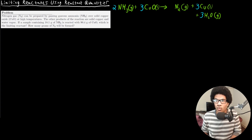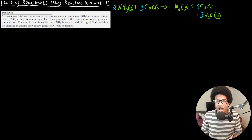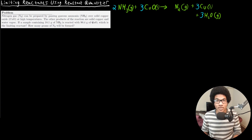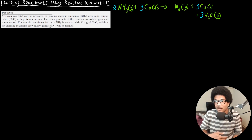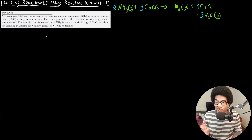Now we want to figure out which reactant is the limiting reactant. We have 18.1 grams of ammonia and 90.4 grams of copper oxide. One thing you want to resist doing is just looking at the masses and saying there's less ammonia, so that must be the limiting reactant — that's wrong reasoning. These masses are not on comparable footing; we have to convert them to moles to compare them and see which one will run out first.